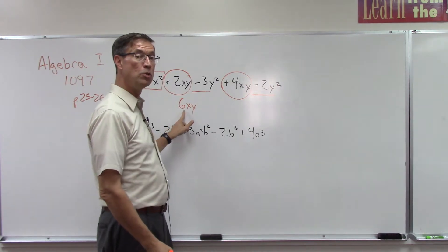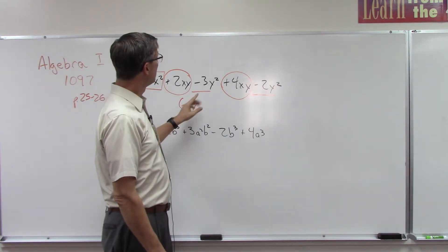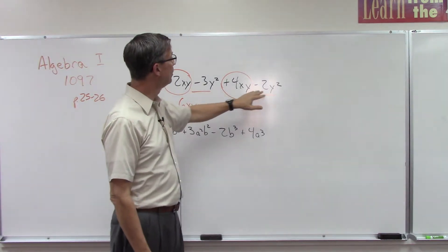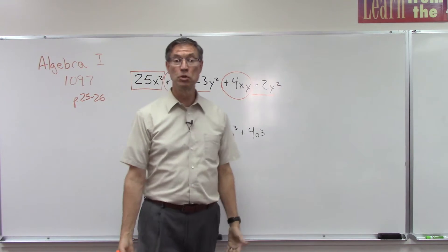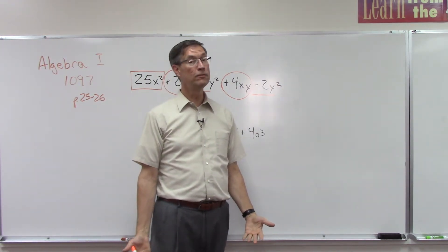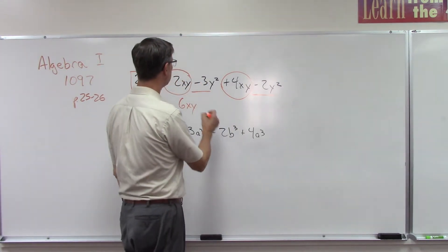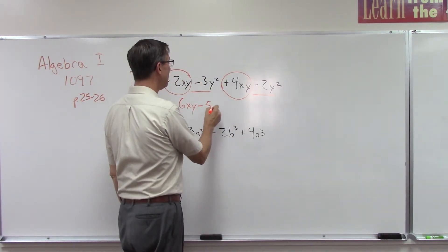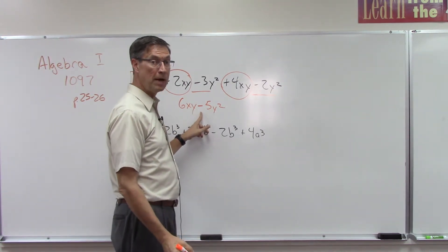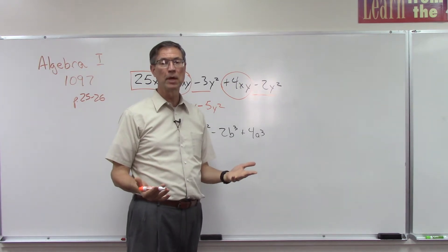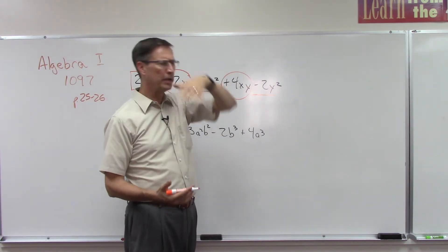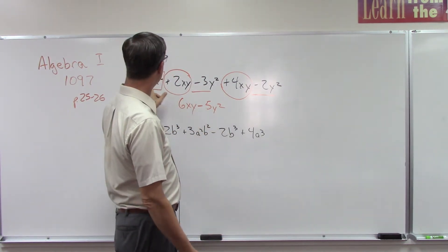Now I'm going to take the y terms and put these two together. So I'm adding negative 3 plus negative 2. Add and keep the common sign, so negative 5, correct. Negative 5 would be the same as saying plus negative 5, or you could say minus 5y². Either one is the same thing. If you go to the score key and you had one and they have the other, don't mark it wrong if that's all it is.